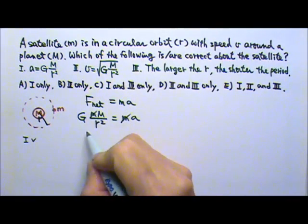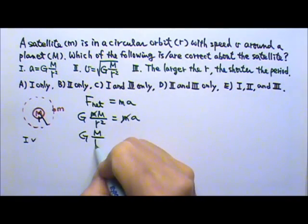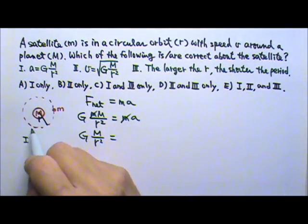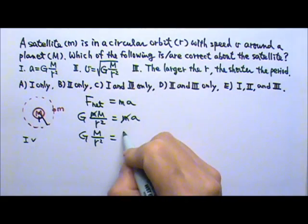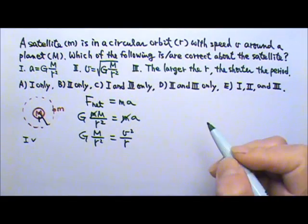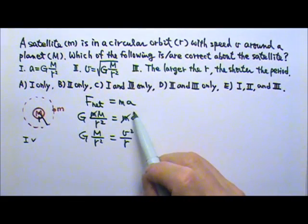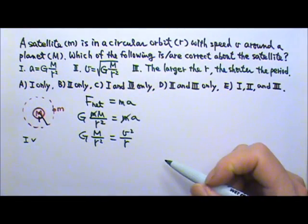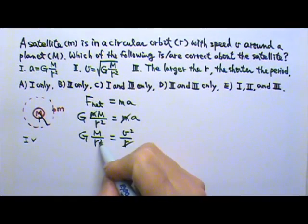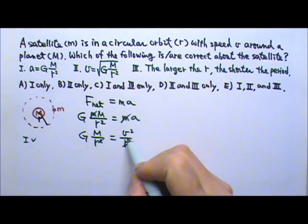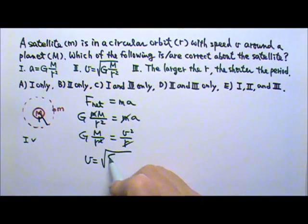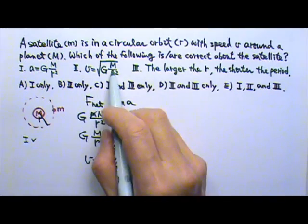Now the GM over r squared equals the acceleration. Since it's circular motion, the centripetal acceleration would be v squared over r. Replacing the a with this can give you information about the speed. So here the r's cancel. That means v is, take square root on both sides, you get square root of GM over r. So number 2 is wrong.